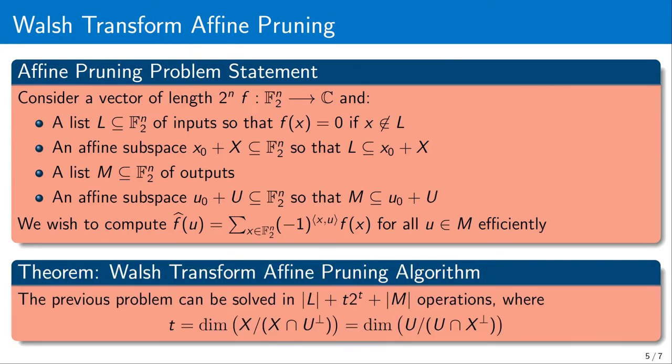We describe an algorithm which can reduce the complexity of computing such a Walsh Transform to one of smaller dimensions, 2 to the t, where this parameter t is smaller than the dimensions of x and u. This means that the final complexity will only depend on the number of non-zero inputs, the number of desired outputs, and the parameter t.